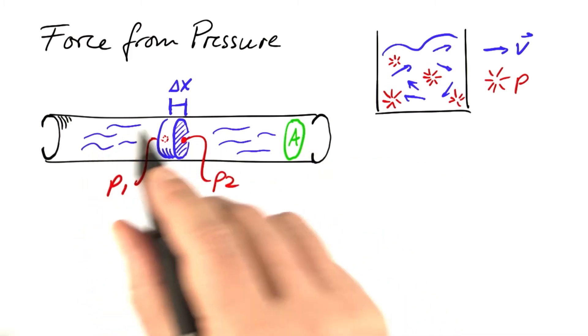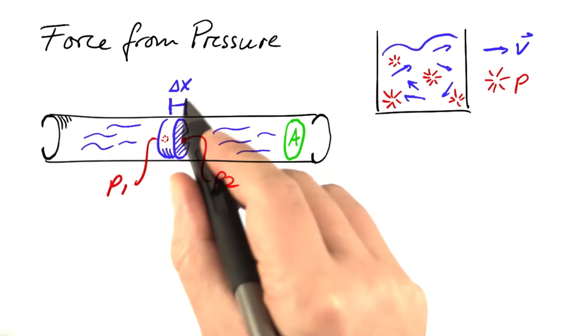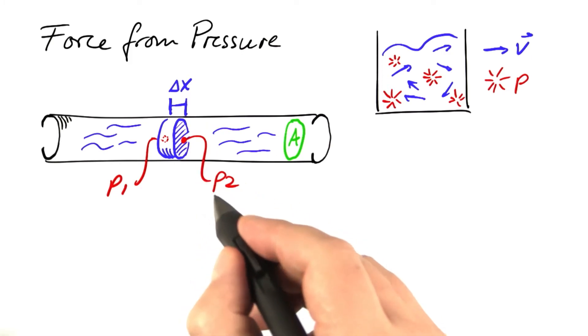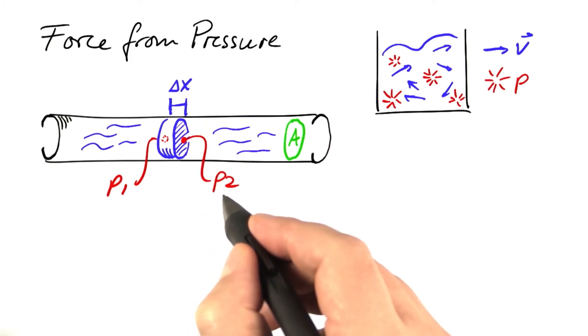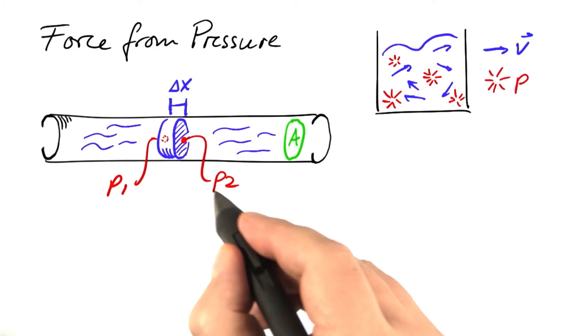Let's replace some amount of that fluid with a piston of width delta x. And let's assume that the pressure to the left of that piston is P1 and the pressure to the right of that piston is P2.